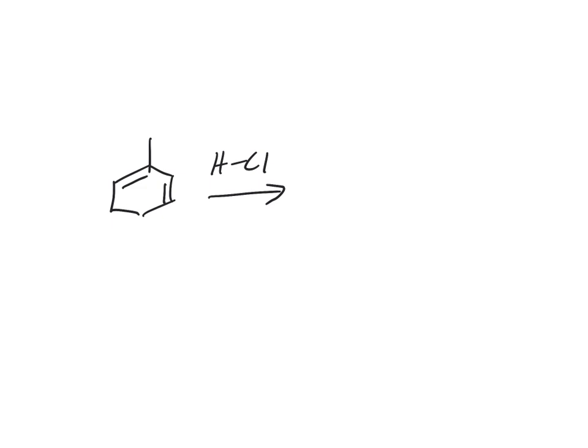So taking a look at a sapling question, here we have a diene, and the question is draw the intermediate and product structures, including any formal charges, and they want the most stable resonance form.